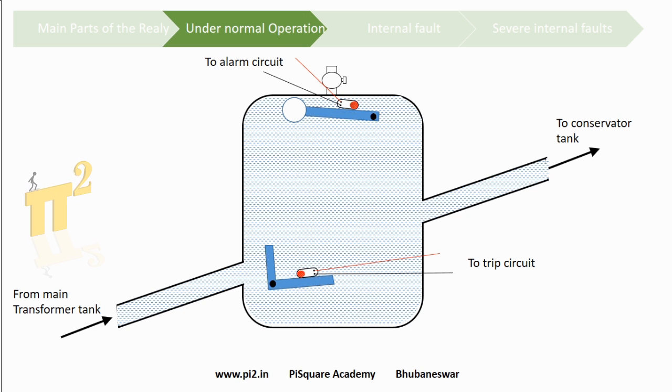Now, under normal operating conditions, observe the mercury switch position. In this position, neither the alarm nor trip circuits are activated.